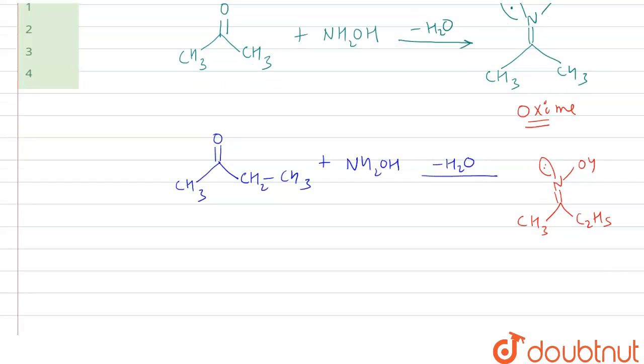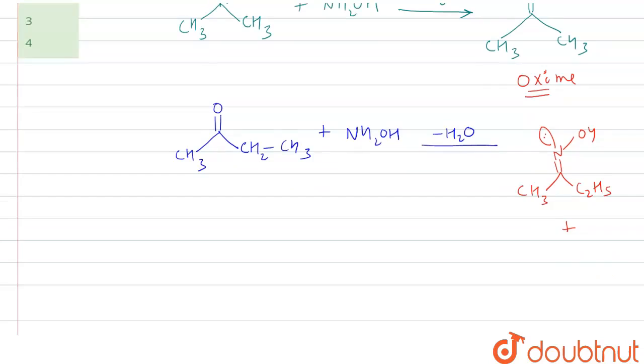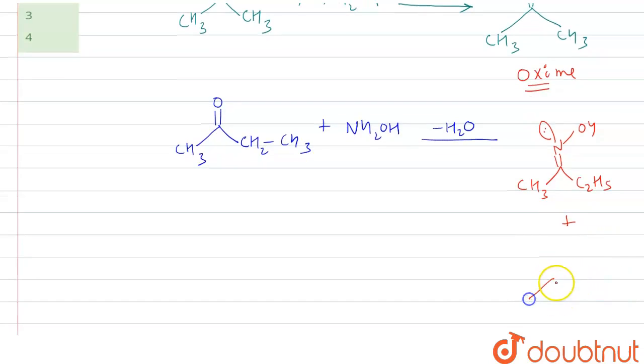We can see that there is one more option here. In this position, when this OH is anti with CH3, there is also a chance that this ethyl group will be anti with our OH group, then it will give a different type of oximes with CH3.